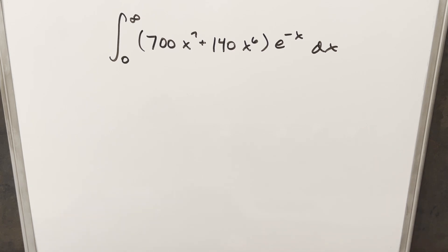Okay, we're going to integrate another integral. We've got the integral from 0 to infinity of 700x^7 plus 140x^6 times e^(-x) dx.